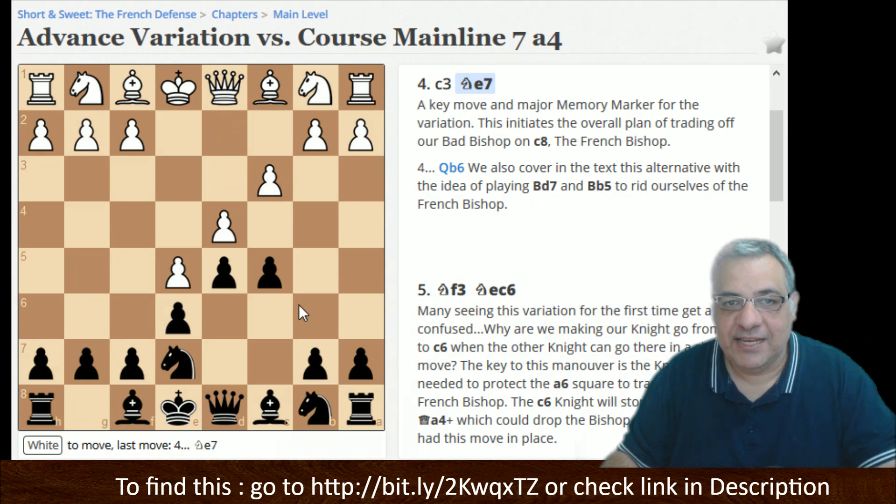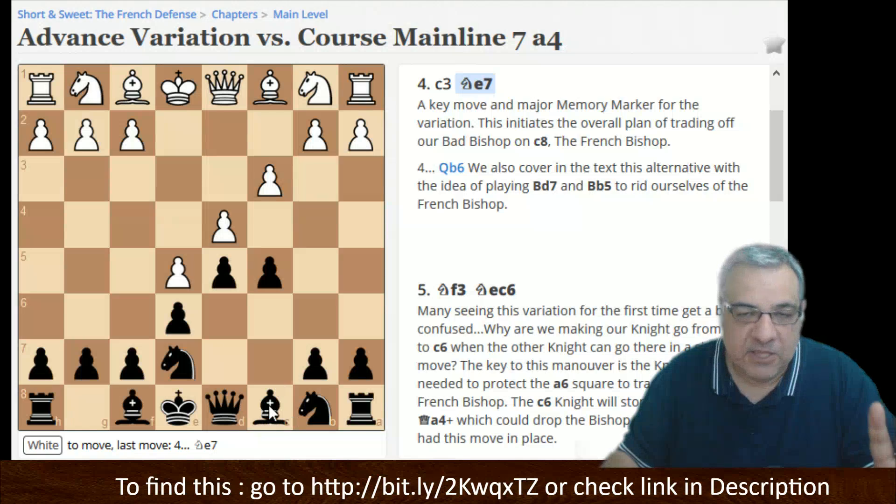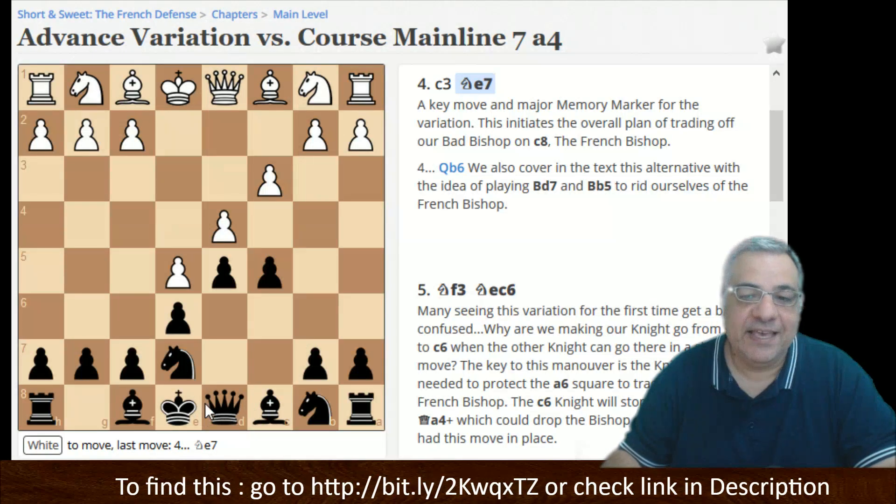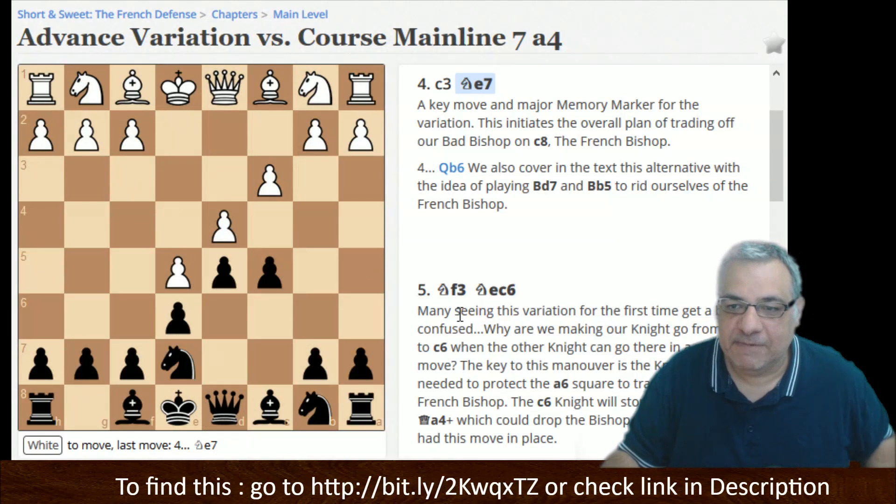So this checklist which he introduces is also absolutely excellent, and the major component of that checklist is the French Defense classic imbalance that you offer to the opponent: this bad Bishop. If we can get rid of the bad Bishop, then we'll have very good promising endgames without any nightmares. For example, good knight versus bad Bishop.